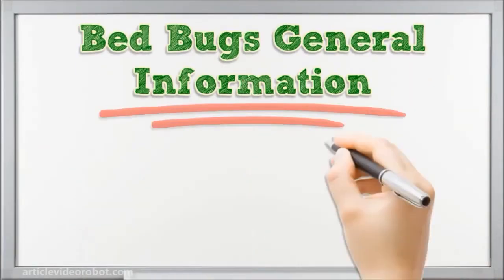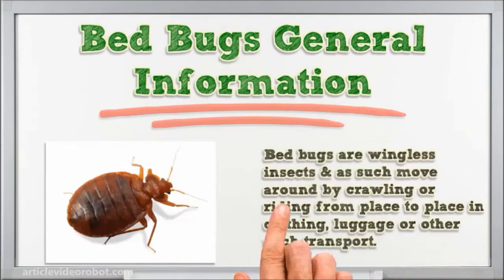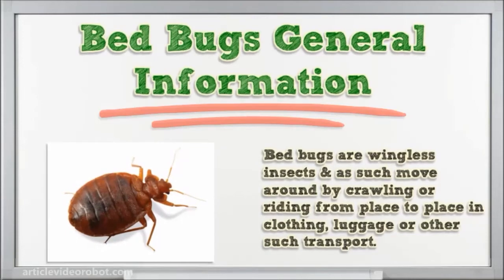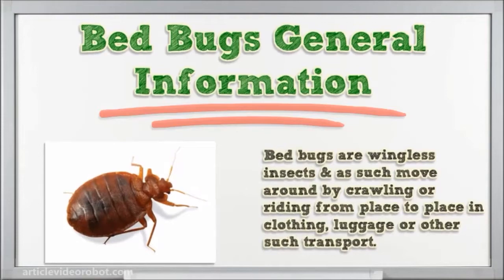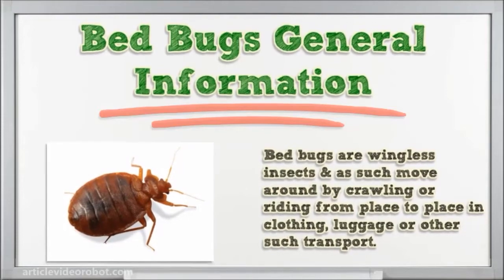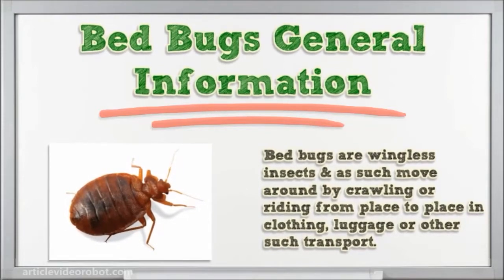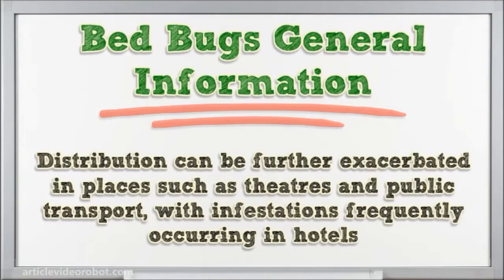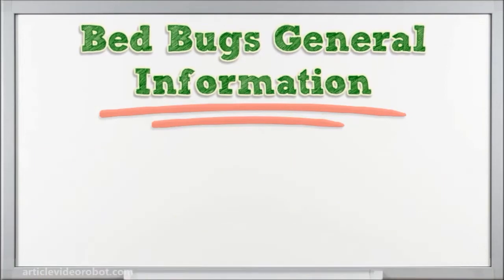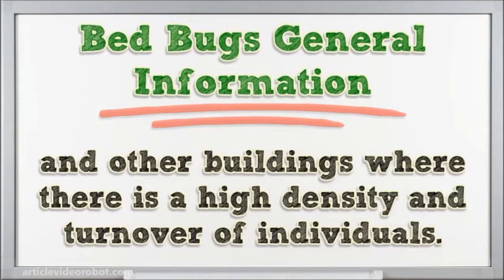Bed bugs are wingless insects and as such move around by crawling or riding from place to place in clothing, luggage, or other such transport. Distribution can be further exacerbated in places such as theaters and public transport, with infestations frequently occurring in hotels and other buildings where there is a high density and turnover of individuals.